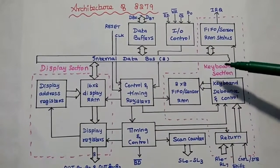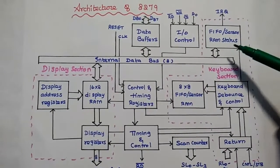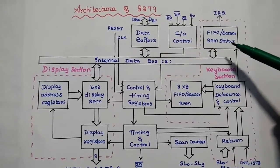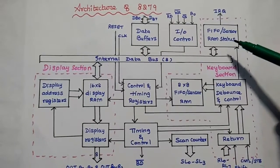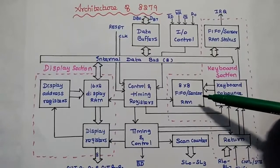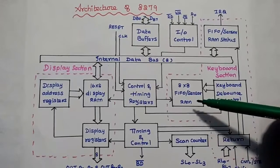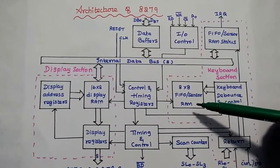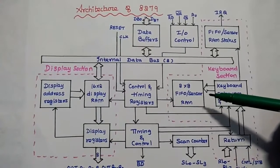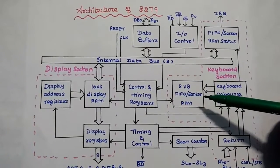The next one is the keyboard section. The first unit is FIFO or Sensor RAM status — this status signal is mainly used to track the storage of the RAM locations. The 8x8 FIFO or Sensor RAM is used such that in scanned keyboard mode or strobed input mode, this RAM is used as FIFO RAM — that is first-in first-out RAM. In sensor matrix mode, it can be used as a sensor RAM.